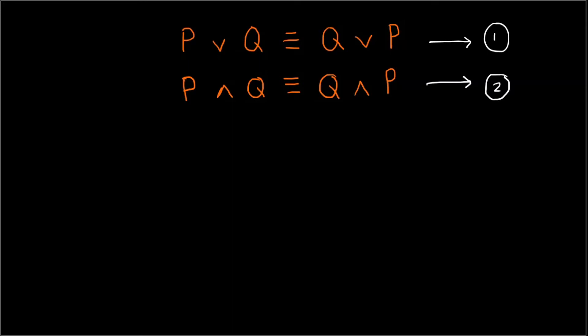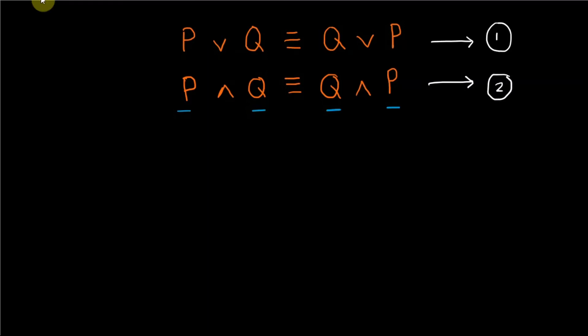Therefore it states that simply changing the order of variables does not change the truth value of certain connectives in a compound proposition.